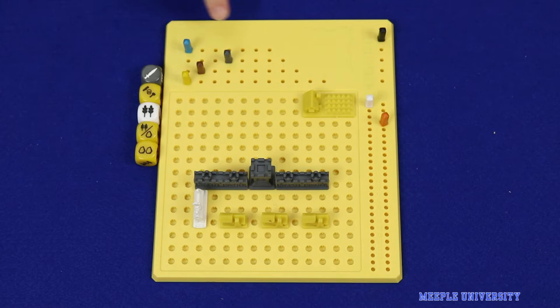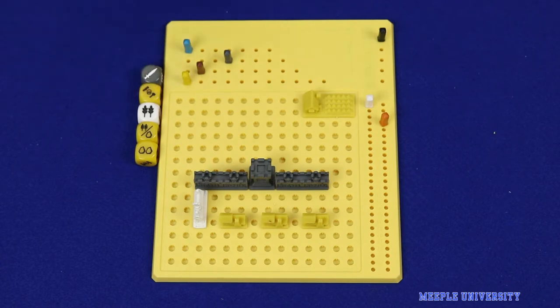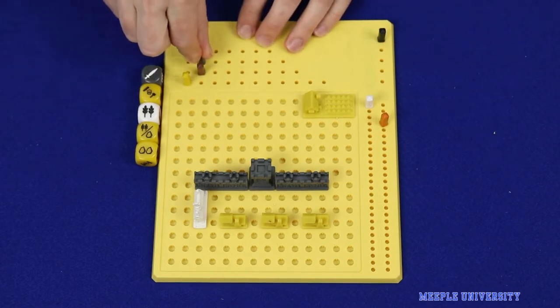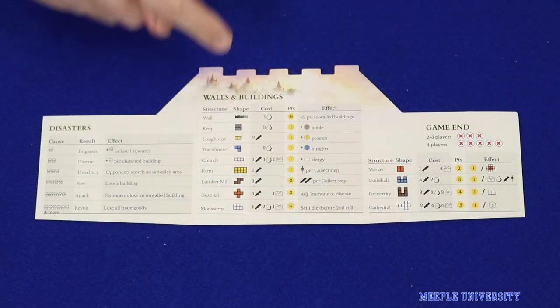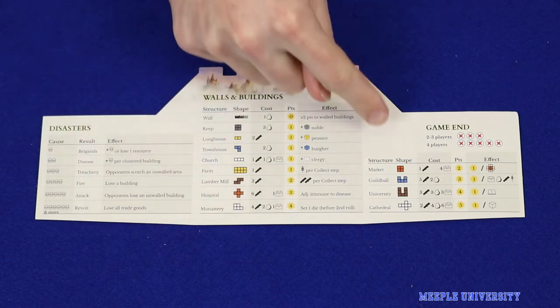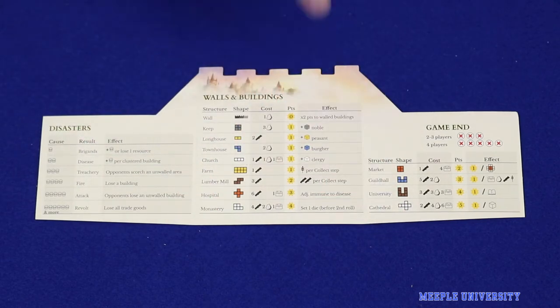Then, players spend their building resources: wood, stone and trade goods, to construct buildings, at a maximum of one building per hammer icon rolled. Players move their resources down and may then place the building anywhere they like on the board. There are 13 different types of buildings available for construction, all with different costs, points and effects.